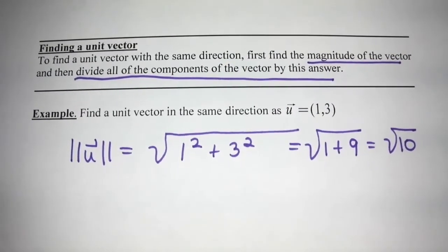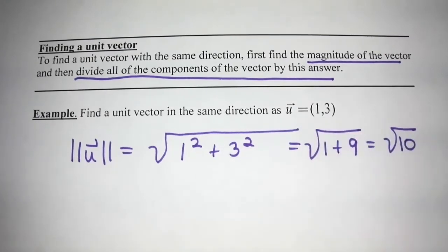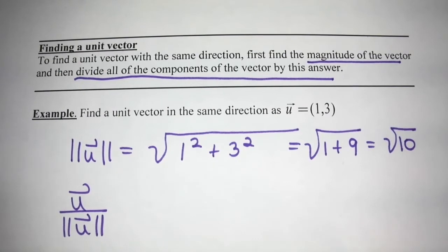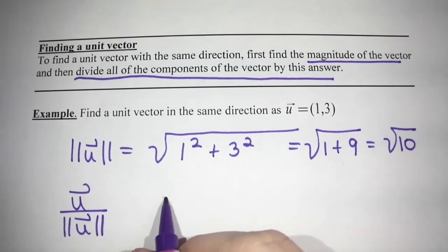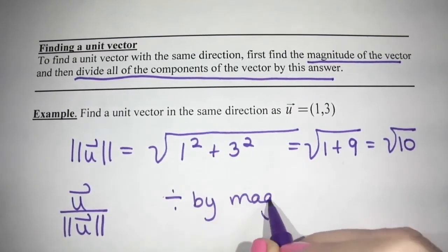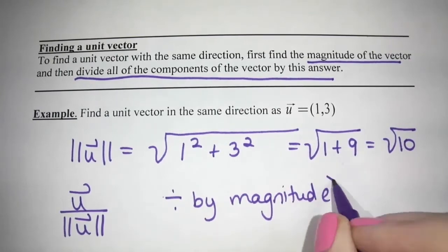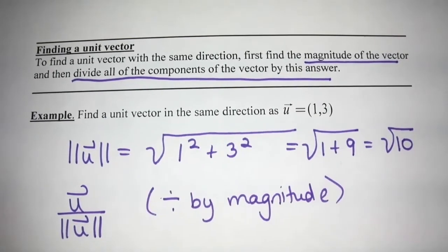And in the same direction means the same sign. So we don't change the signs of U at all. But we take U and we divide by its magnitude. Now, if you're a person who likes formulas, you can write U over magnitude of U. If you don't, you can just remember to divide by the magnitude.